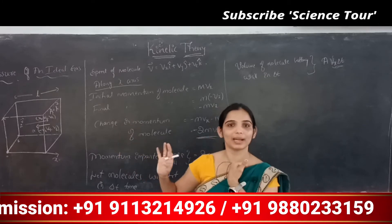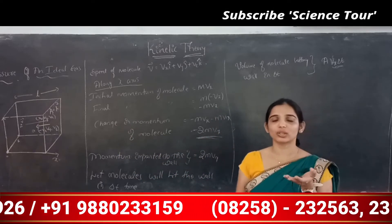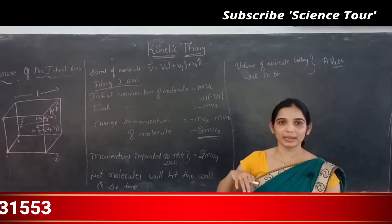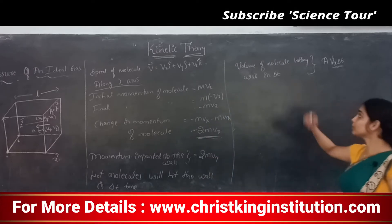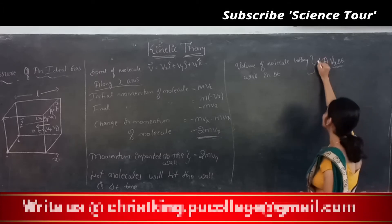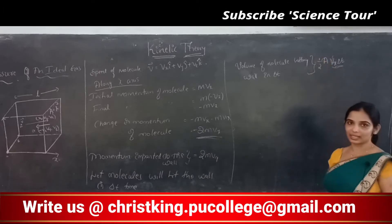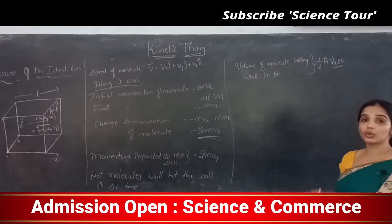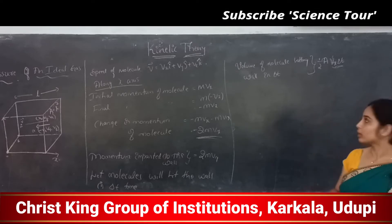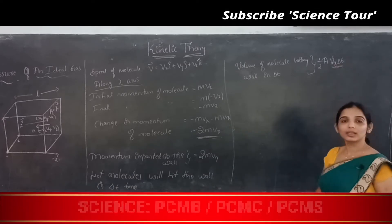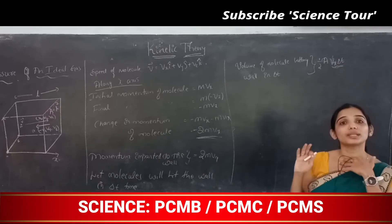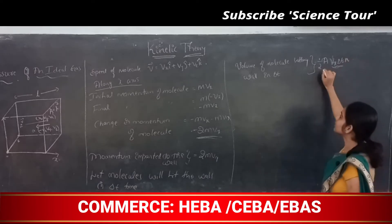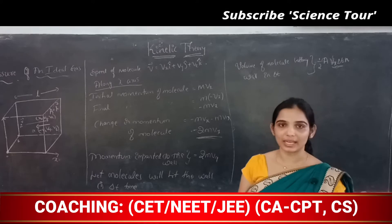On average, half of the balls are hitting the wall and half are rebounding back. So the volume of molecules which are hitting the wall is half × A × Vx × Δt. If n is the number density (number of molecules per unit volume), then this gives us the volume of molecules hitting the wall.